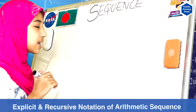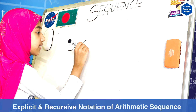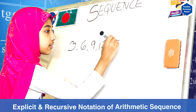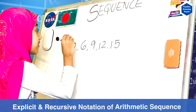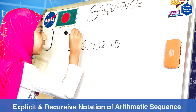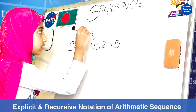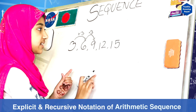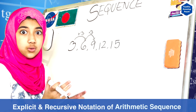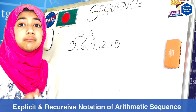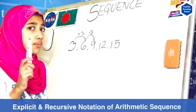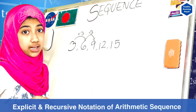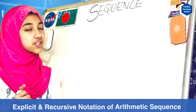So first, what is an arithmetic sequence? Let me give you an example: we have 3, then 6, then 9, then 12, then 15. You may see a pattern — by every term you are adding three, right? So three is the common difference. This is an arithmetic sequence: when you have numbers in a sequence and all of them have the same common difference. The arithmetic sequence only applies for adding or subtracting.